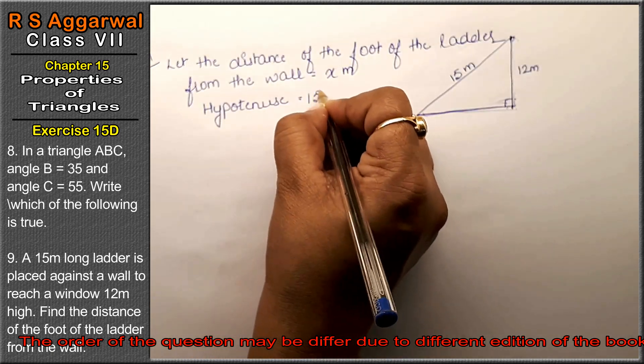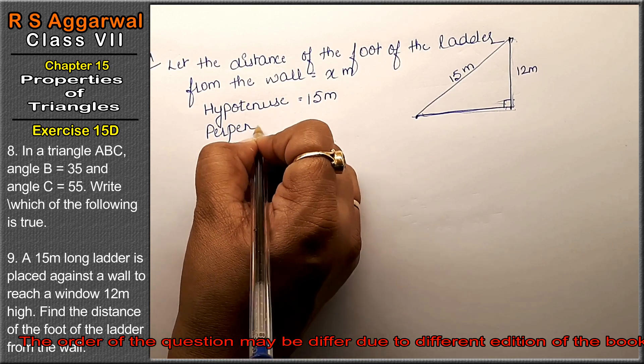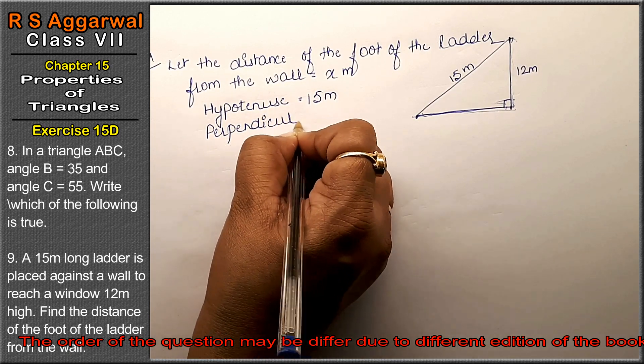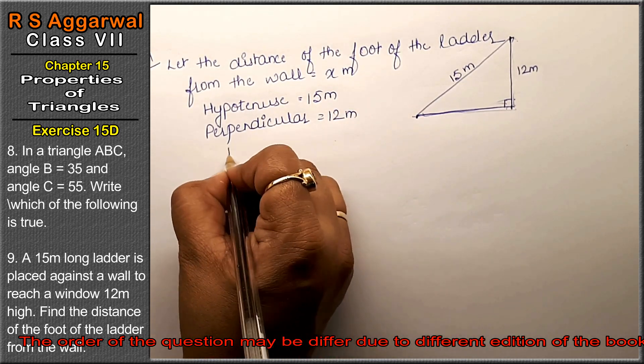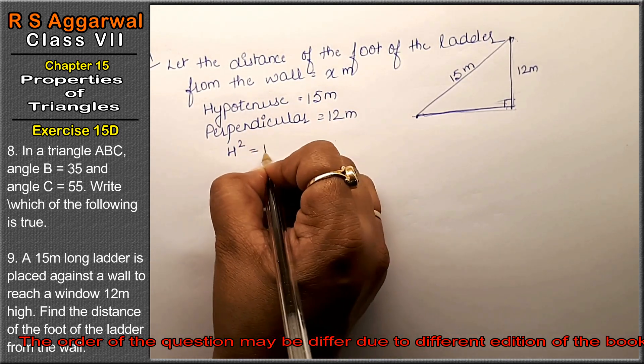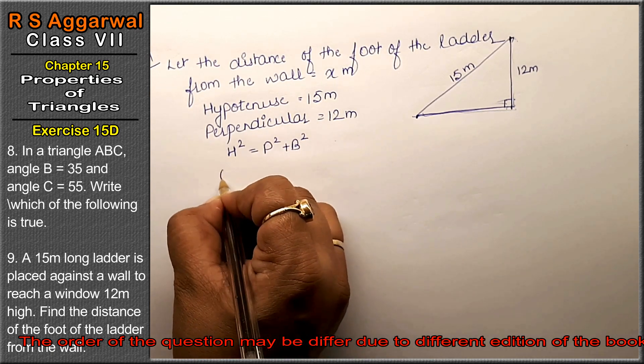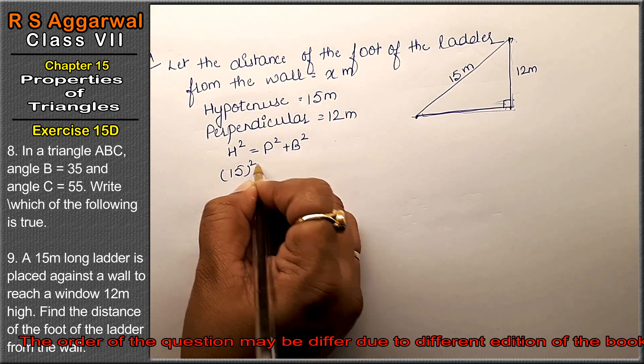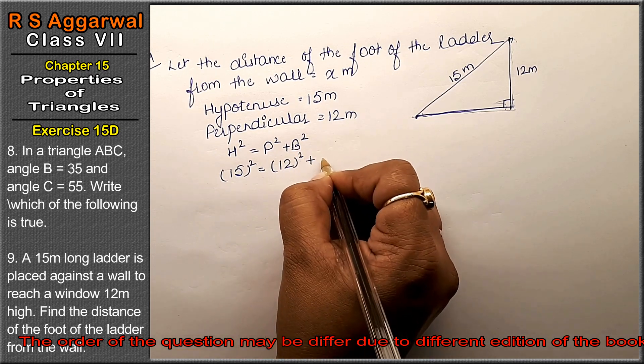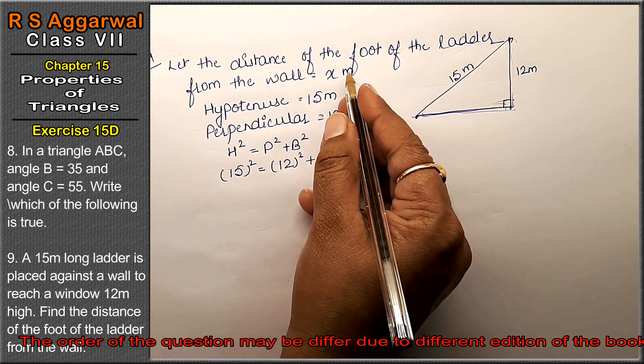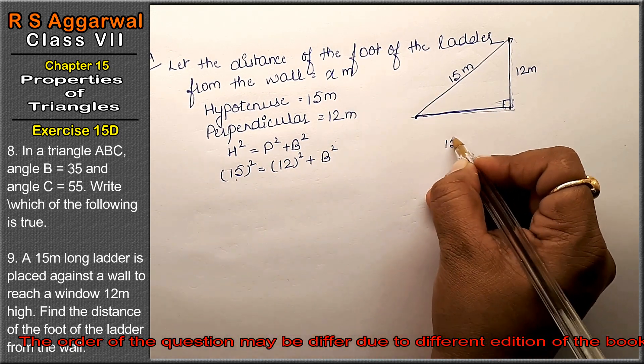How much is our hypotenuse? Hypotenuse is 15 meters. Perpendicular is 12 meters. So the formula is Pythagorean theorem: H² = P² + B². H is 15 squared, P is 12 squared plus B², and B² we've taken as x².